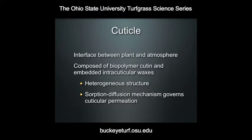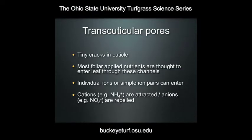It's basically a waxy layer, but the heterogeneous nature of it allows certain things to pass through while preventing others. It's not the cuticle itself that we think is responsible for the absorption of most foliar applied nutrients — we think it's what's called transcuticular pores. These are tiny cracks in the cuticle, nanometers in size, and we believe this is the avenue through which most nutrients enter the leaf. Because of their very small size, individual ions or simple ion pairs are thought to enter through these cracks. However, large chelated materials — depending on the nature of the chelate — may have molecules too large to pass through these channels.